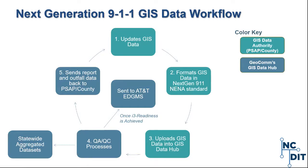Some examples of critical errors are road range overlaps and data falling outside the provisioning boundary. Once the data meets I3 readiness, Geocom will transfer that data into the AT&T database called the EDGMS, and also compile statewide data sets after each QA/QC process. This workflow is very similar to the one we have in place for creating the NC Parcels data product as well as the previous AddressNC efforts. Since the data is maintained by the local jurisdictions — the authoritative source — we want to create the next AddressNC data product from the data being inputted into the Next Generation 911 project.